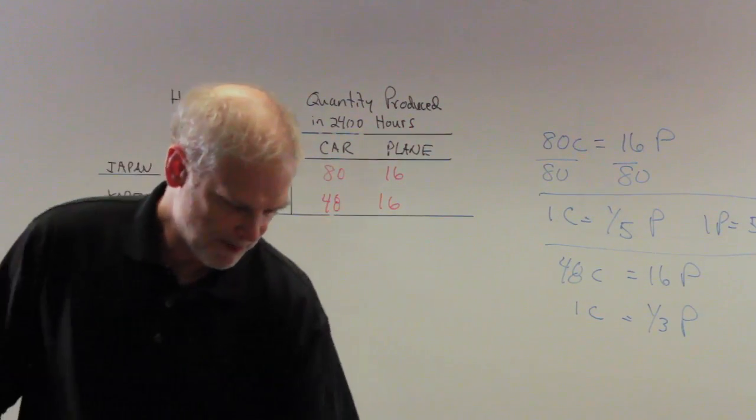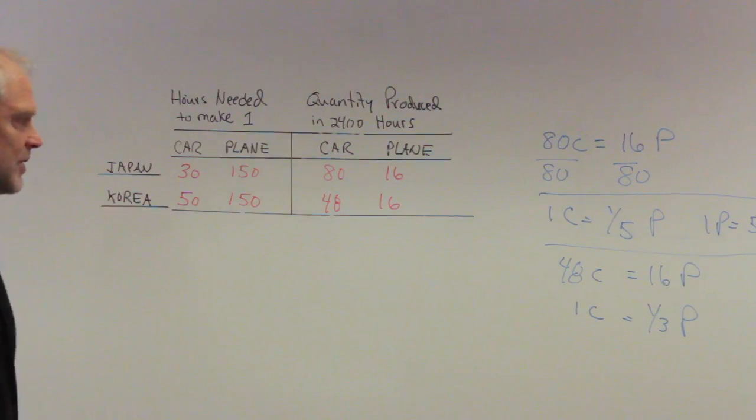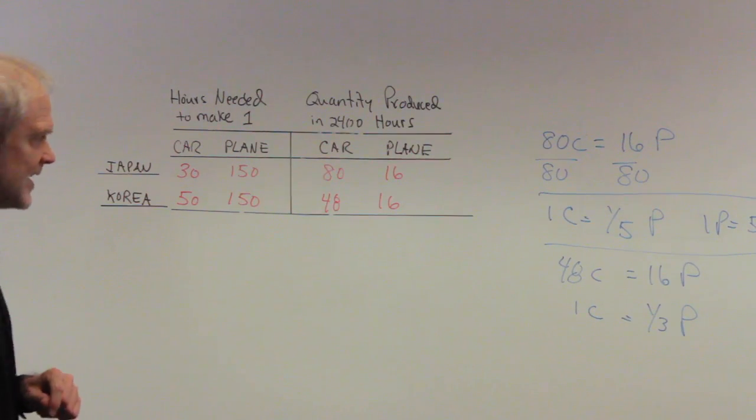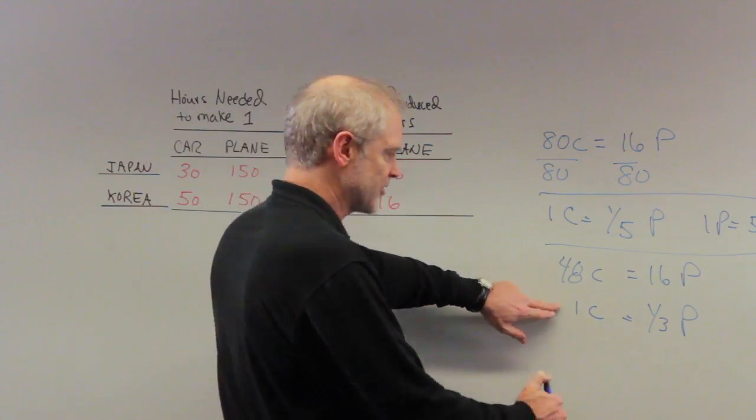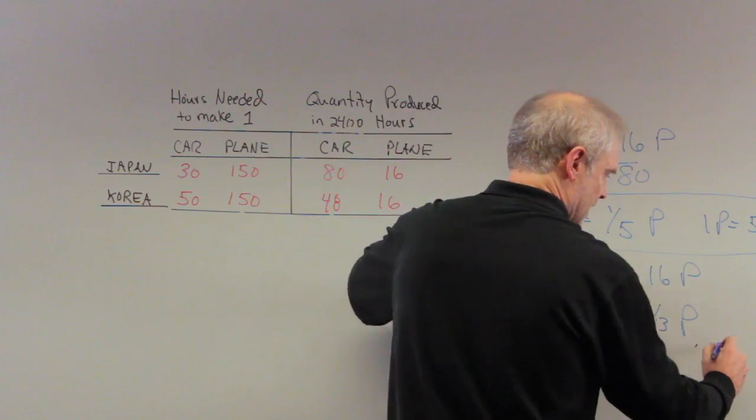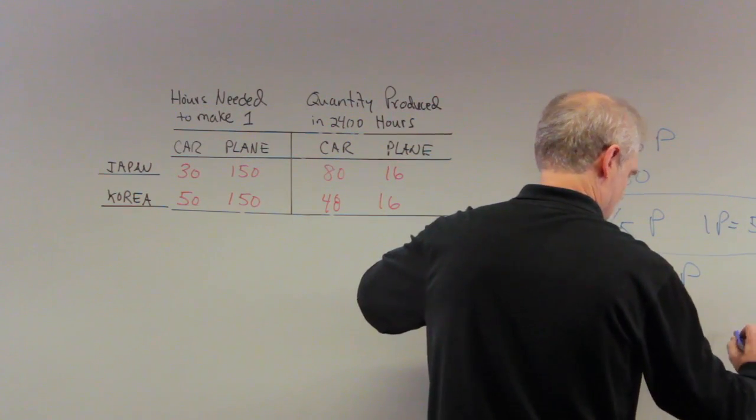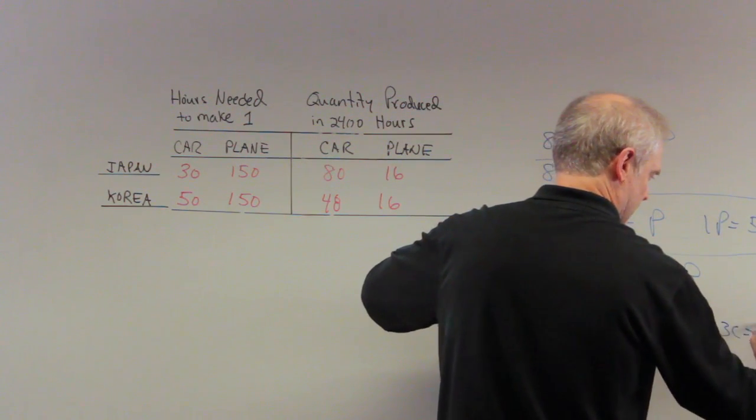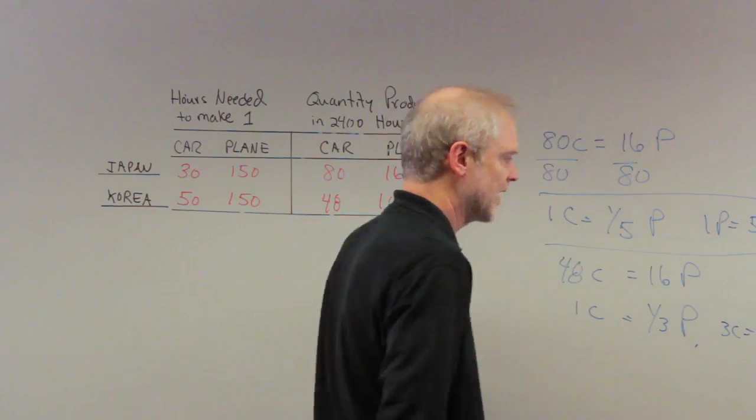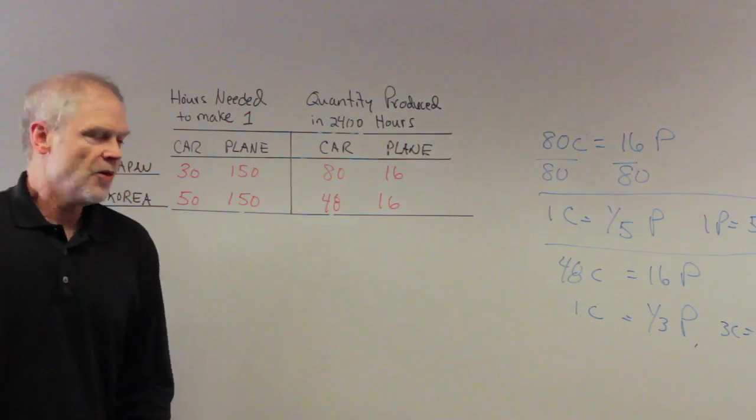Now, what do we do with this? So what does it say? This says, every time, I didn't reverse this. Let me just give you the flip of this. Therefore, we know that three cars are equal to one plane. What do we do with this? It says to us now that every time Japan produces a car, they only give up a fifth of a plane. But every time Korea produces a car, they give up a third of a plane. Clearly a third is larger than a fifth. So for Japan, the opportunity cost of producing a car is less in terms of planes than it is for Korea because their opportunity cost is a third of a plane.